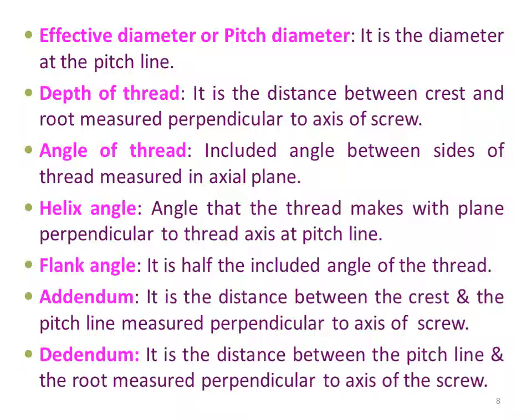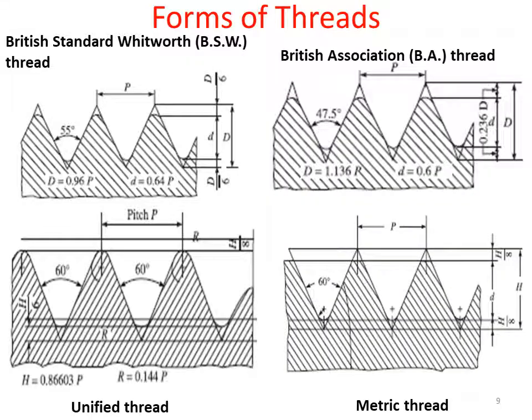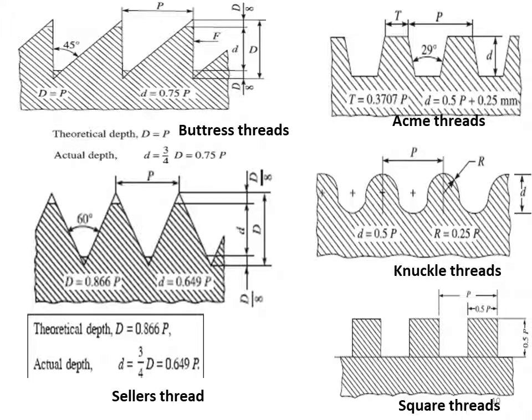Now let us see the different forms of screw threads. These include British Standard Whitworth (BSW) threads, British Association (BA) threads, unified threads, and metric threads — each having different parameters and thread angles. Other forms include buttress threads, acme threads, sellers threads, knuckle threads, and square threads. These are some of the unique thread forms.